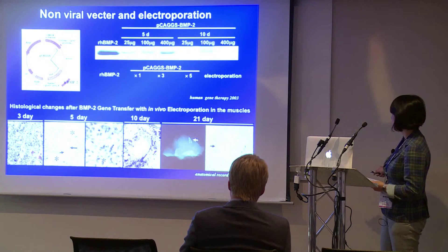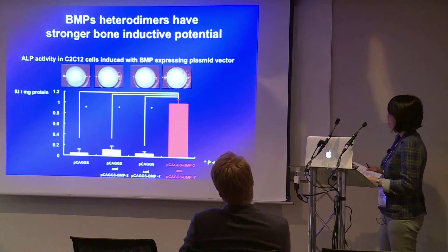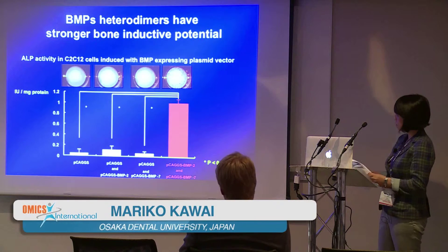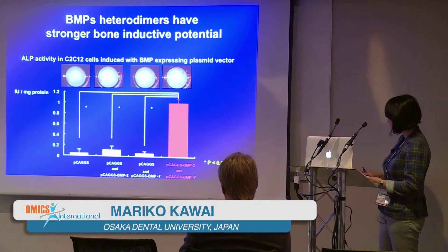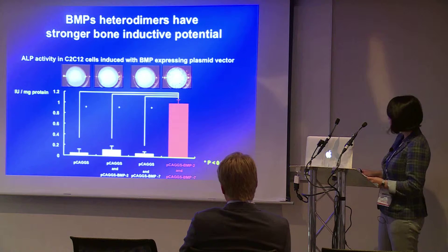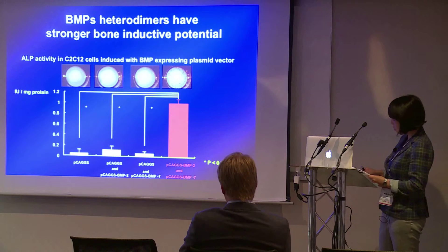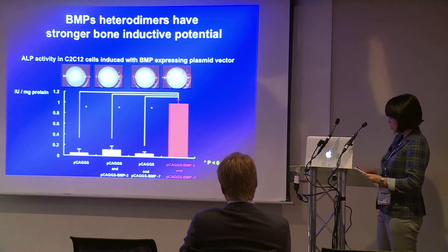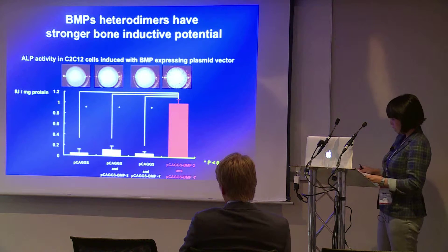In histological analysis, there are mature bone tissues including bone marrow, osteoclasts, and lining osteoblasts. Human BMP2 gene transfer using transcutaneous in vivo electroporation without surgical operation induced bone formation in rats. However, there was no significant relationship between the dose of plasmid vector and the volume or quality of the ectopic bone.